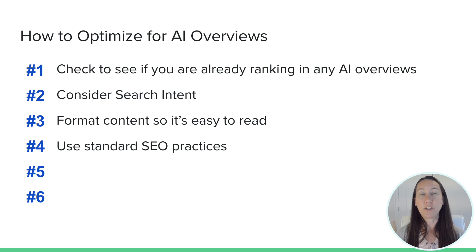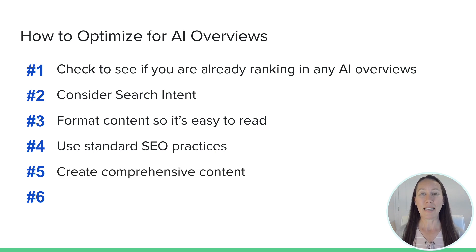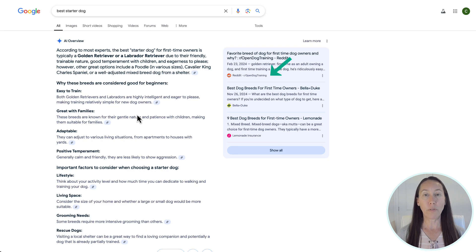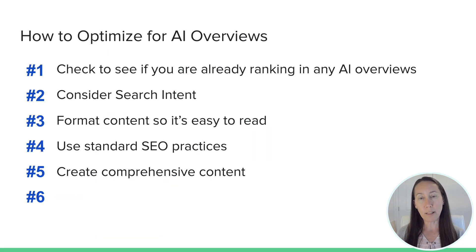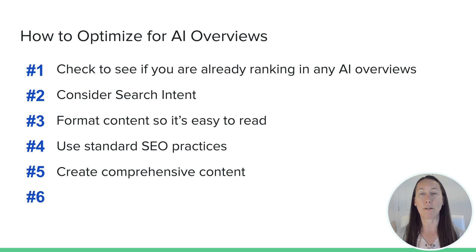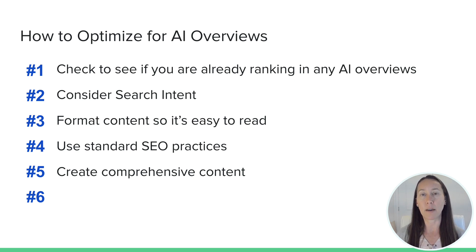The fifth thing you want to do is create comprehensive content. Google links cards to additional subtopics for searchers to click through — not only answering the exact question, but also including relevant subtopics so searchers can continue to explore. A comprehensive informational piece broken down into different headers and sections that really covers a topic very well is particularly helpful here.